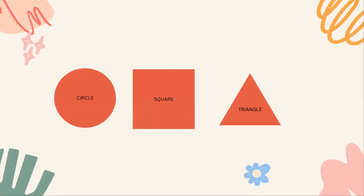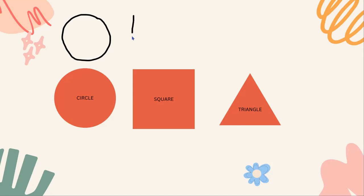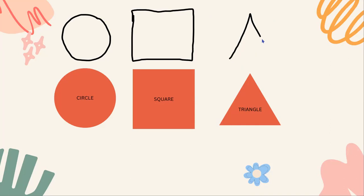Okay students, let's review these three shapes: the circle, the square, and the triangle. What I'd like for you to do now is take your finger in the sky and draw a big circle. Now take your pointer finger to the sky and draw a square. And finally, take that pointer finger to the sky and draw a triangle. Good job!